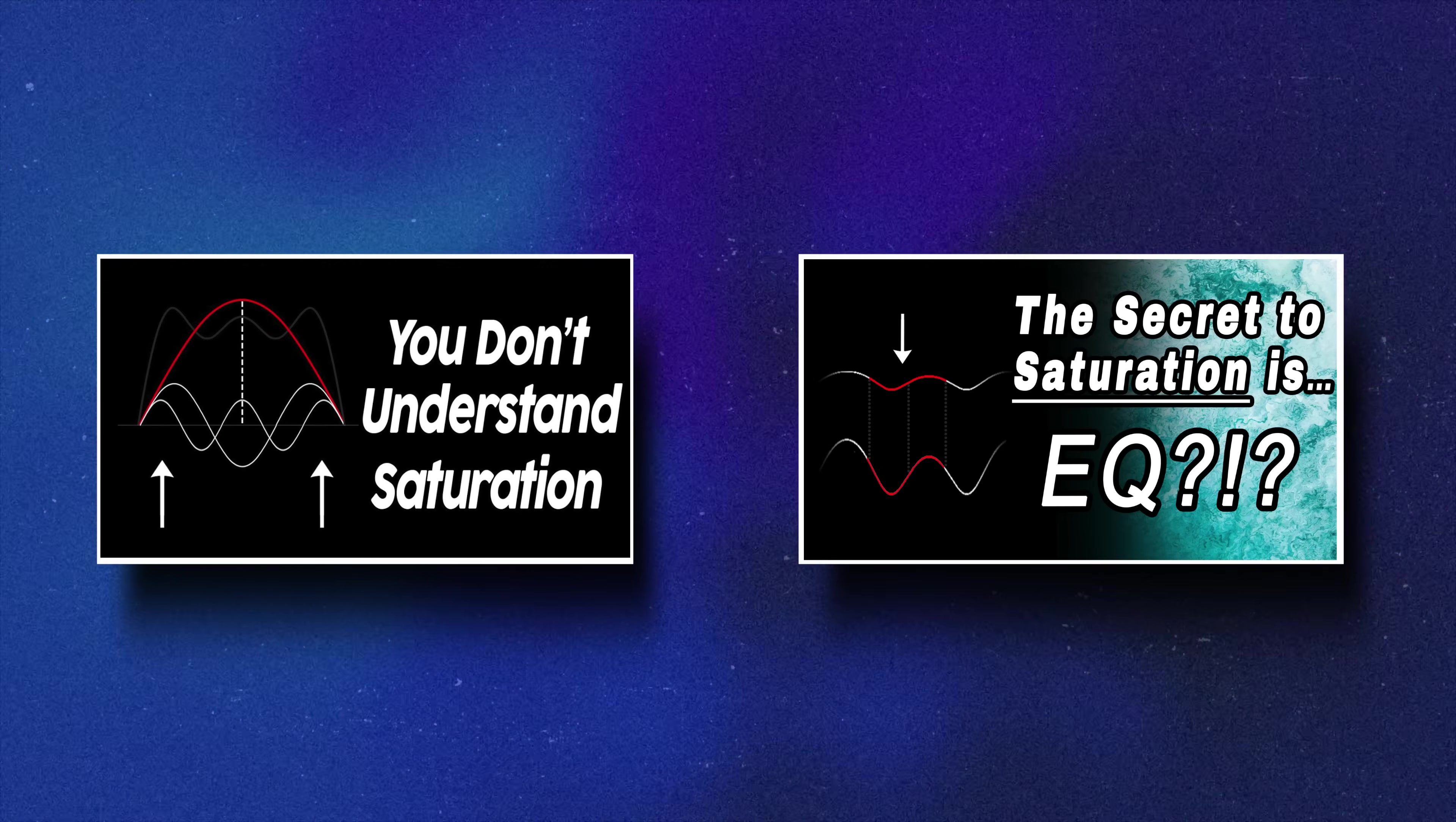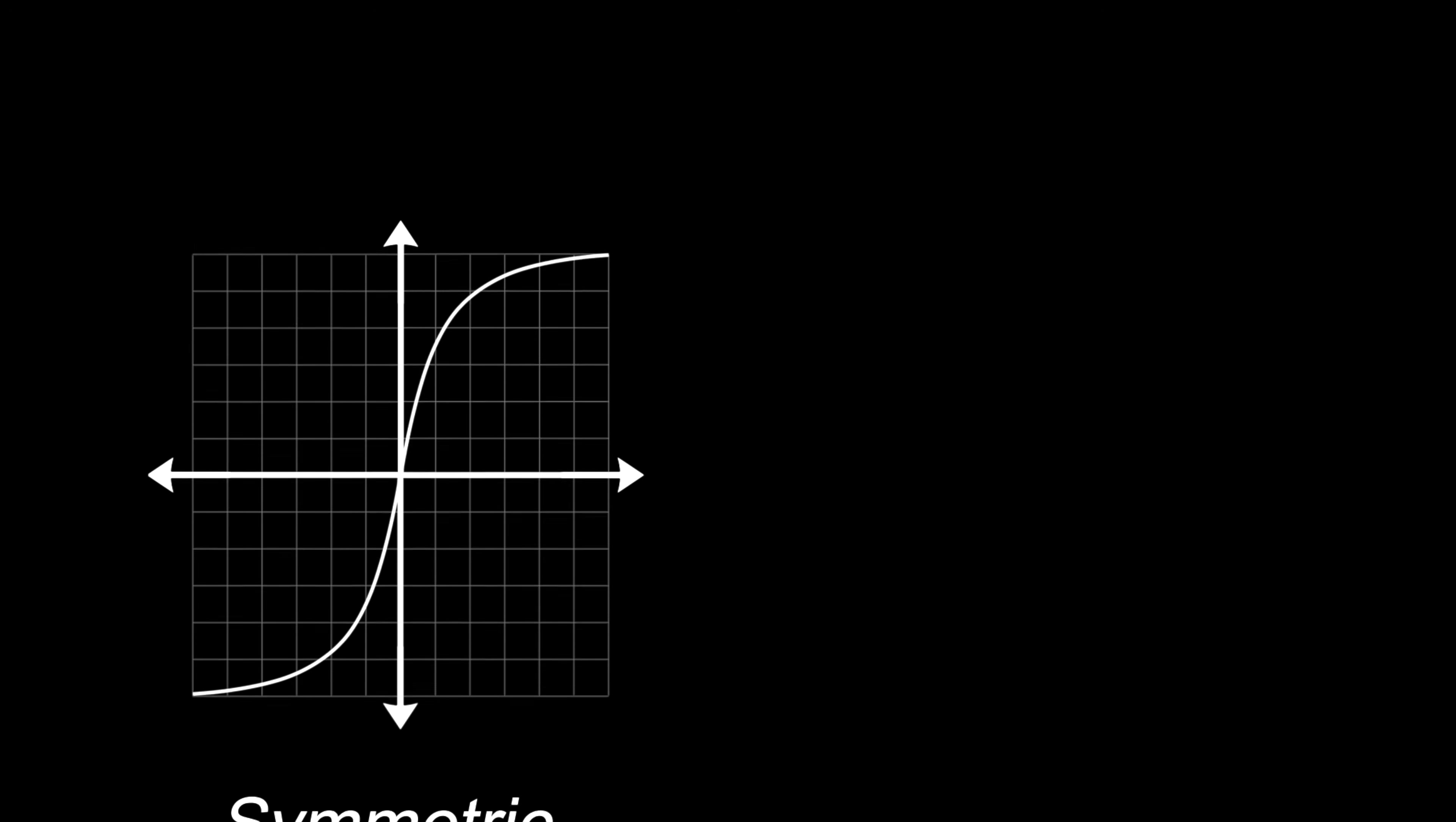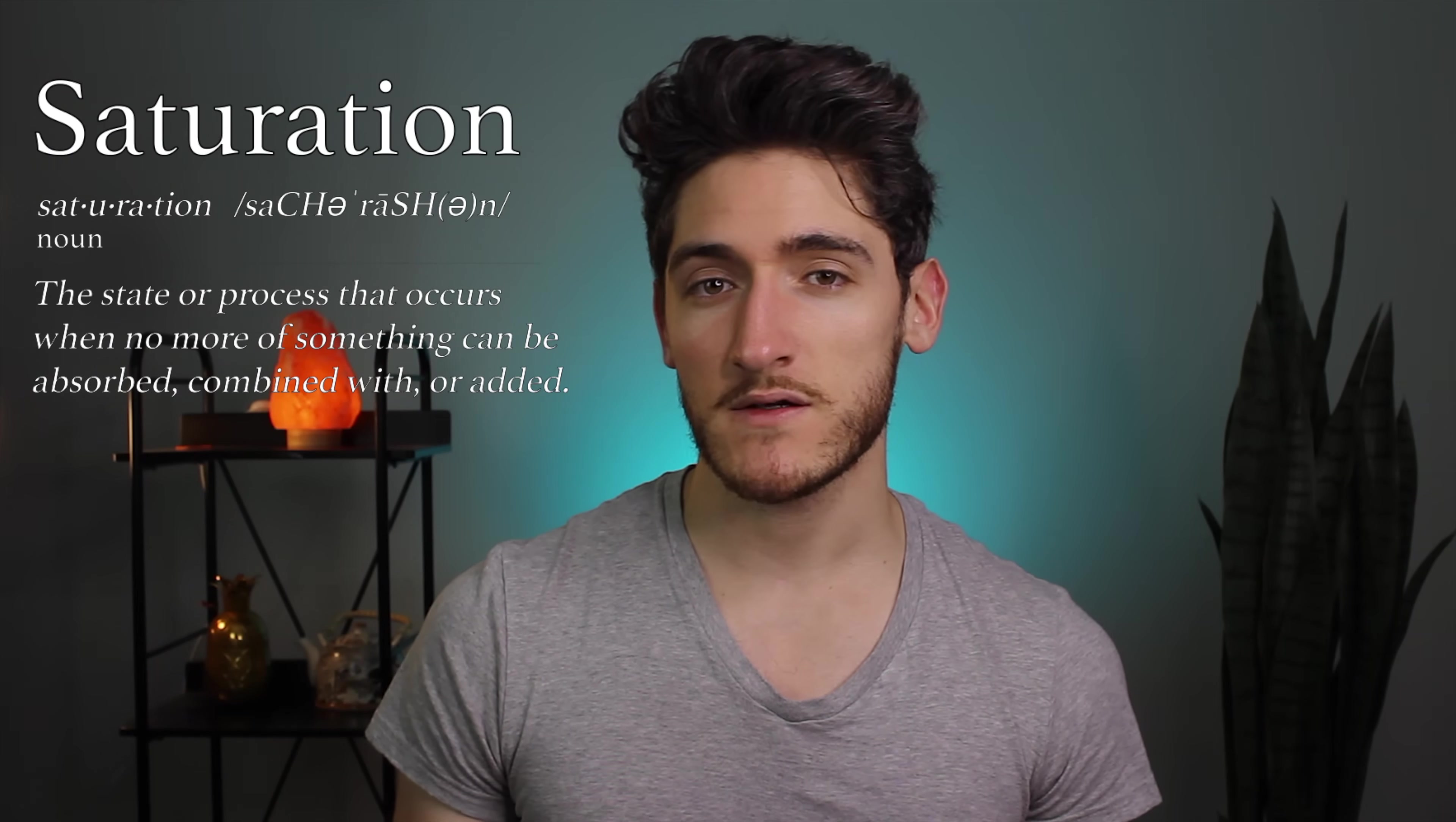I recommend you watch the first two videos of this series because a lot of this stuff isn't going to make sense unless you've seen them. In the last video I focused on two kinds of curves: odd symmetric curves and asymmetric curves that have a similar shape. These are the most common kinds of curves used in distortion, and really the word saturation refers to curves like these.